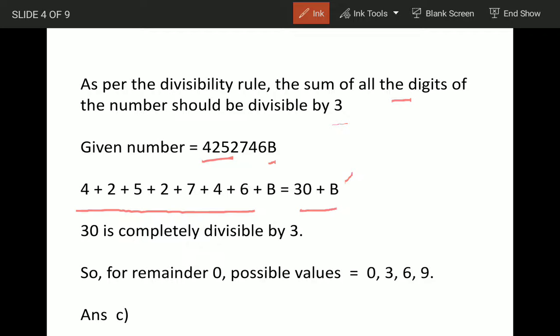That means 30 + B should be divisible by 3 with no remainder. It's very obvious: if B = 0, we get 30 which is divisible by 3. Next possible value is B = 3, so 30 + 3 = 33